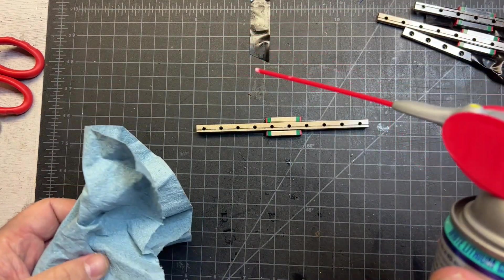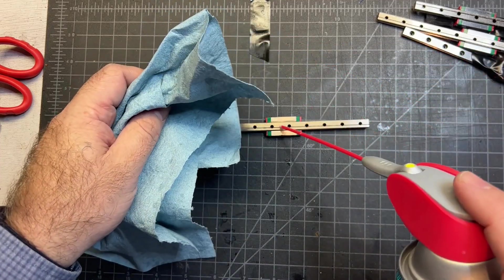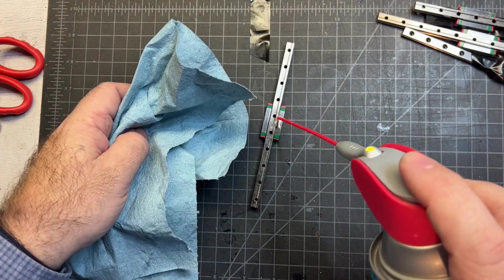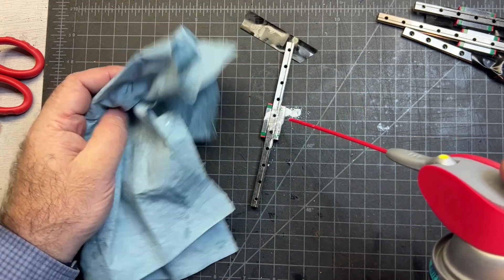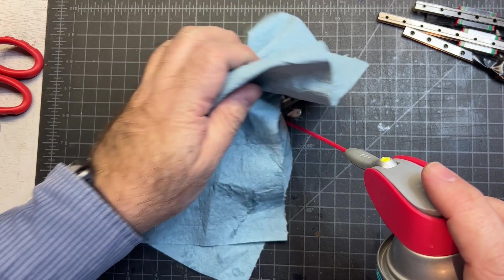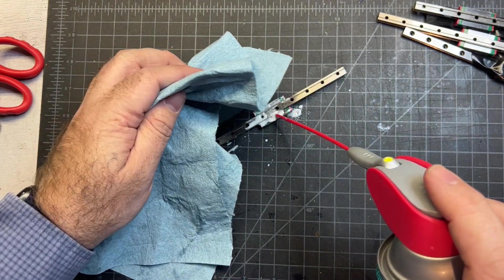I definitely recommend using a paper towel when you do this because it's going to spray everywhere. You can come in here on the side and just spray it like that. You can also come on the other side. Give it a good spray, make sure it coats all the way around.